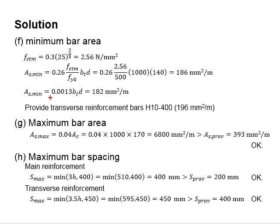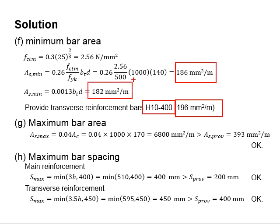Therefore, the transverse reinforcement bar can be provided with the As minimum. In this case, H10-400 is provided as the area of 196 is greater than the minimum As required.